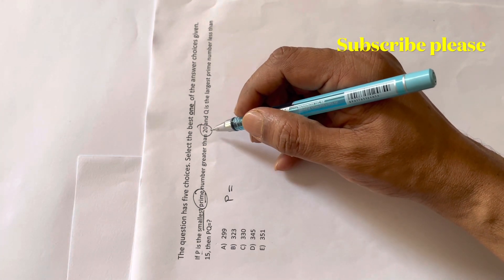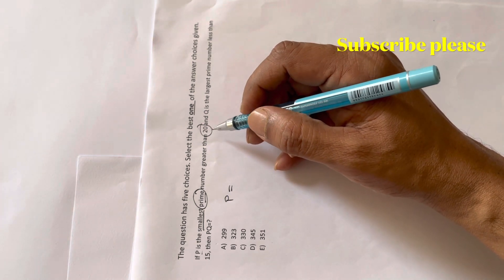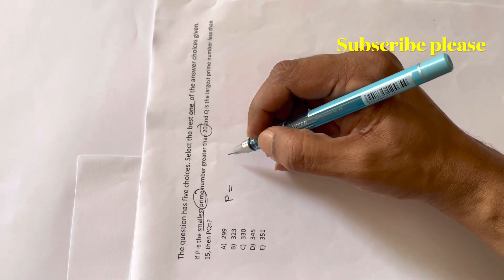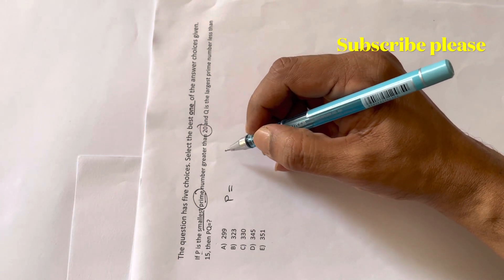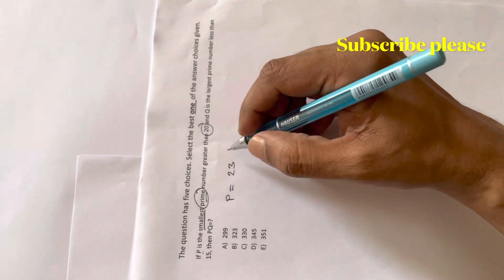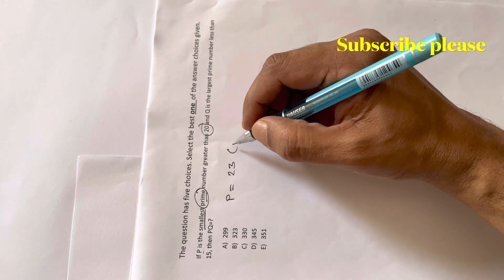So 20 is a composite number. 21 is a composite number. 22 is a composite number. But 23 is a prime number.